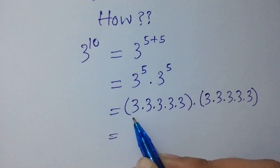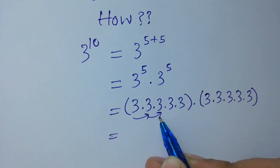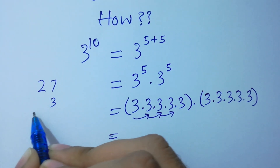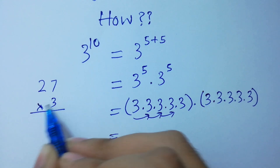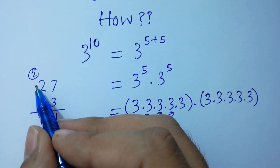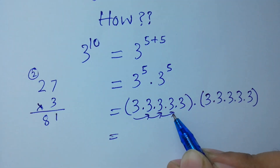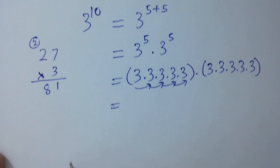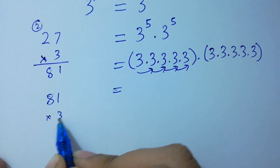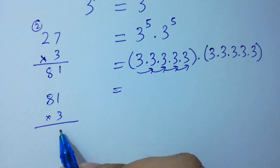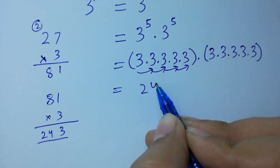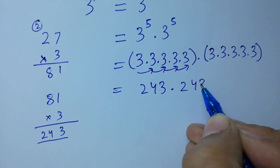Let's verify: 3 × 3 = 9, 9 × 3 = 27. For 27 × 3: 7 × 3 = 21, write 1 carry 2; 2 × 3 = 6, 6 + 2 = 8, giving 81. Then 81 × 3: 1 × 3 = 3, 8 × 3 = 24, giving 243. So 3⁵ = 243, confirmed on both sides.